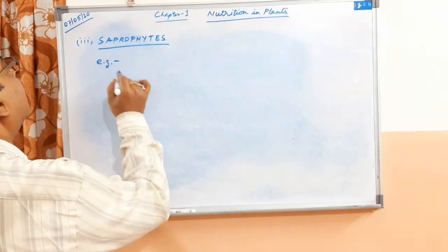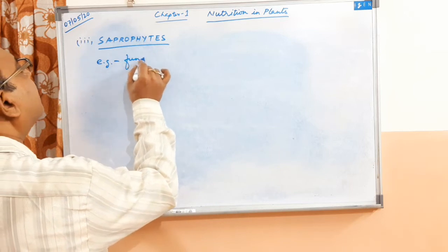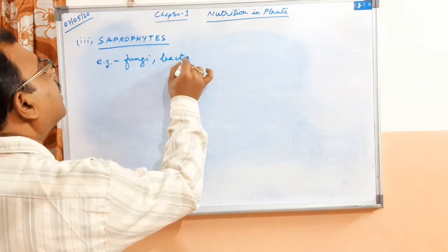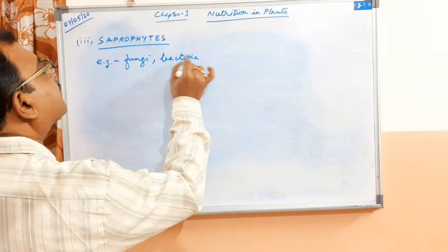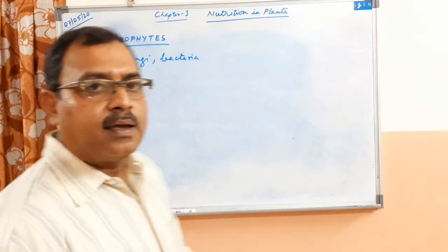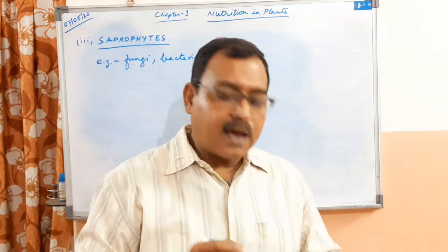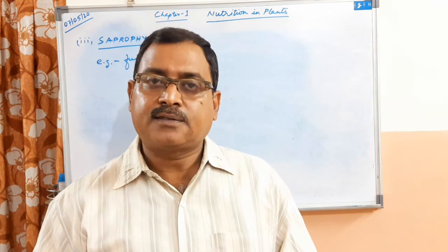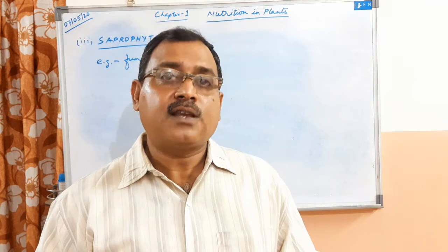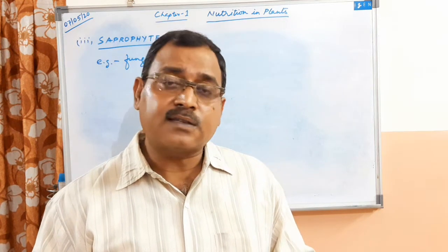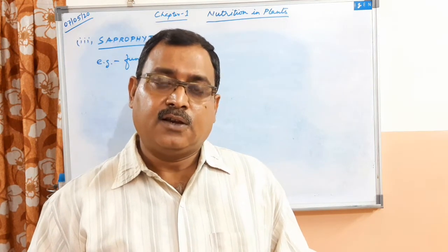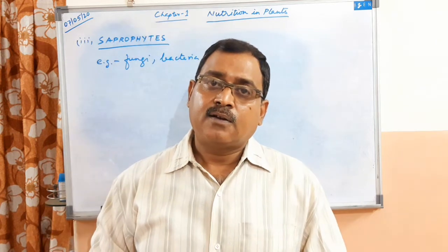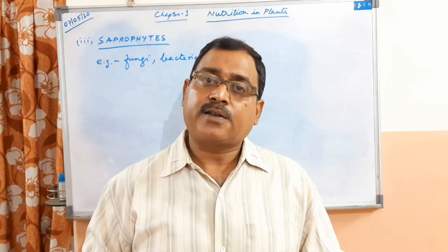Examples of saprophytes are fungi and bacteria. Now fungi are considered as non-green plants. Since they are non-green, they cannot perform photosynthesis, so they have to depend on some other organisms for their food.